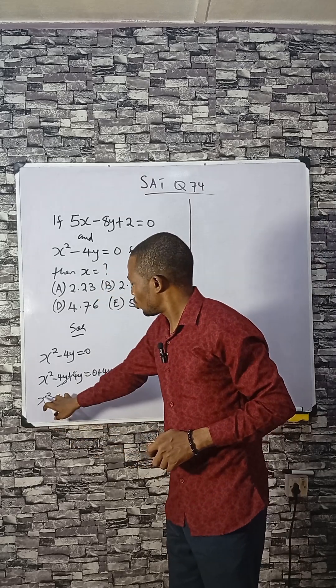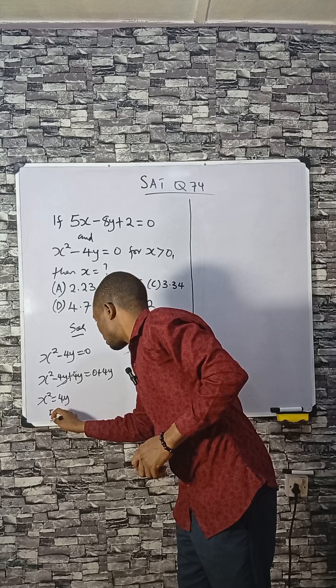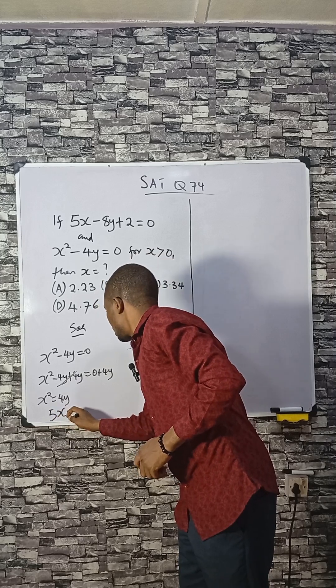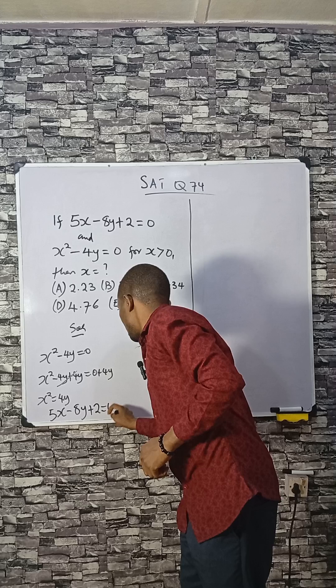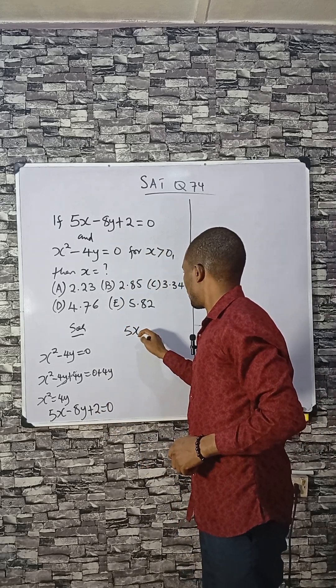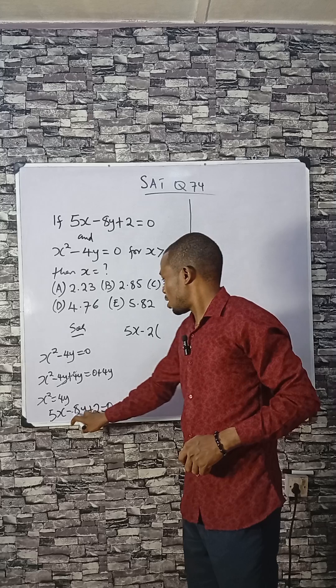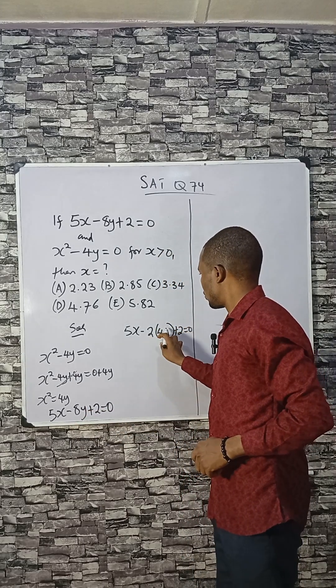That is where you find x² = 4y. Then we go back to the first equation: 5x - 8y + 2 = 0. We can do something here. What if I write 8y as 2 times 4y? So 5x - 2(4y) + 2 = 0, because 2 times 4 is still 8.